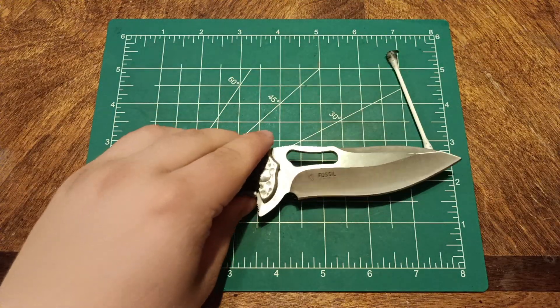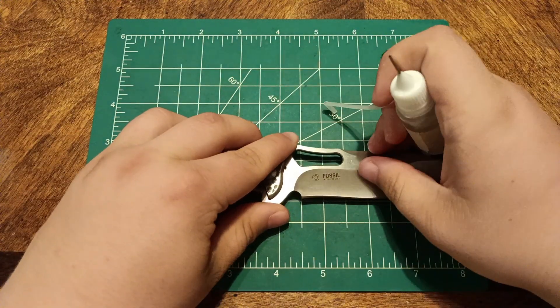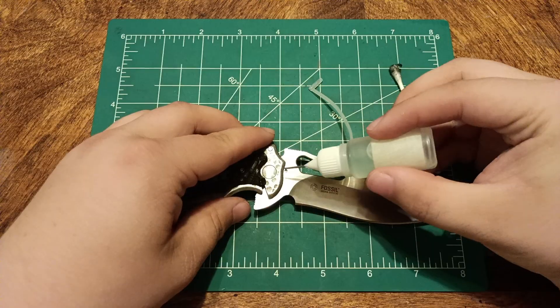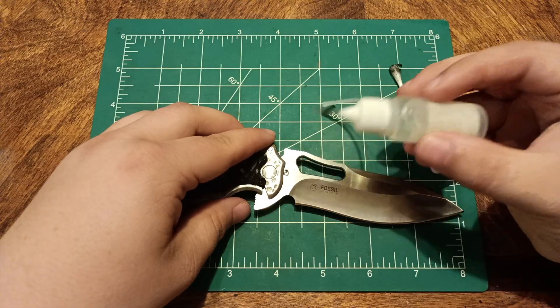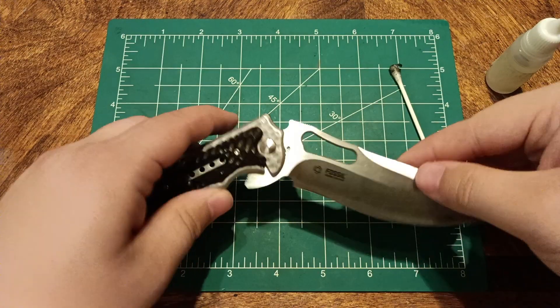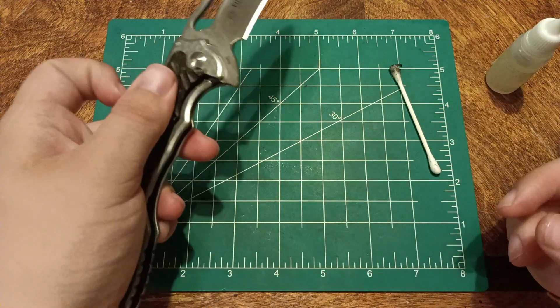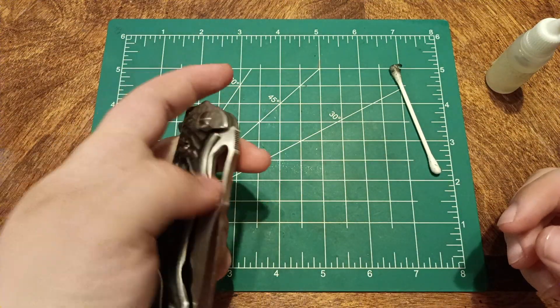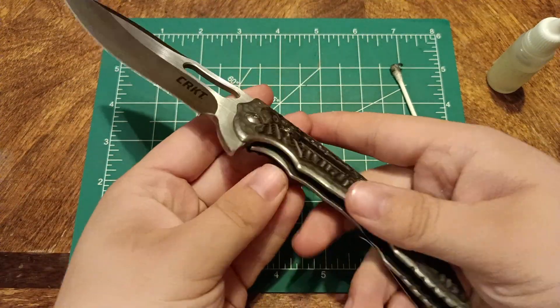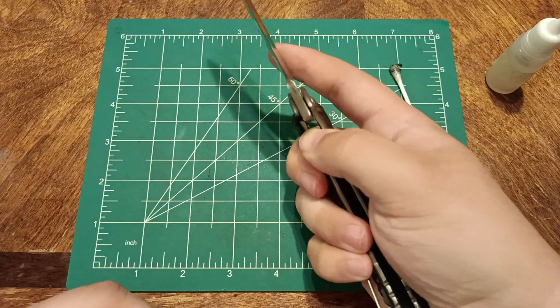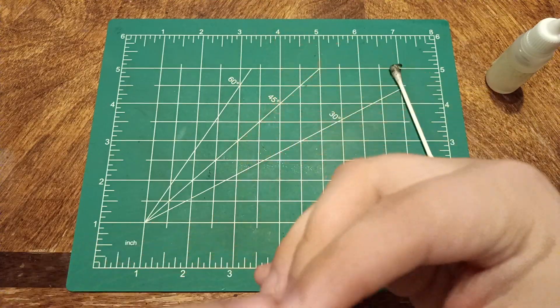Okay, next on the list, a drop of oil right there. That will help make this smoother. That is only for the ball bearing on the liner lock right here. It does make things a lot smoother.